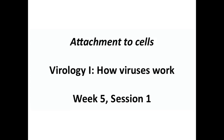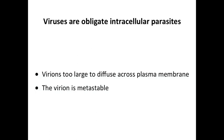Today we're talking about getting into cells — attachment and entry. The problem is that viruses need to get into cells to replicate; they're obligate intracellular parasites, but they can't simply diffuse through the membrane — they're too big. So there have to be active ways that viruses are taken up into cells. Additionally, virions are metastable: stable in the environment, but on some cue they come apart and give up their genome, which plays a big role in today's discussion.